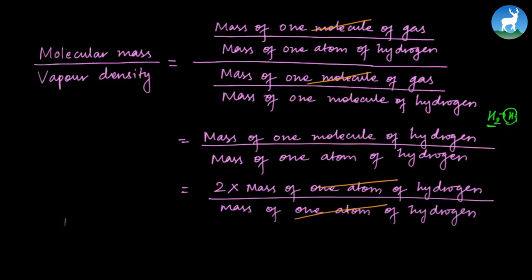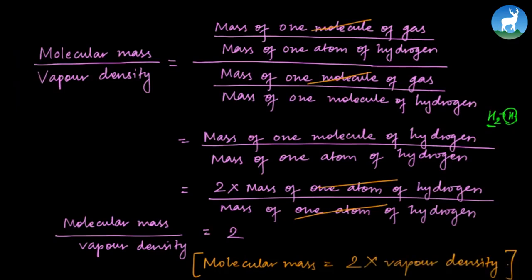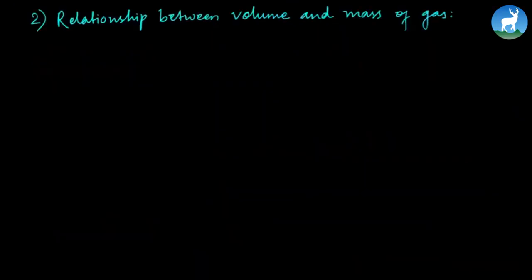Finally, our relation becomes: molecular mass divided by vapor density equals 2. Rearranging, molecular mass equals 2 times vapor density. This is the final relation derived using Avogadro's hypothesis: molecular mass = 2 × vapor density.